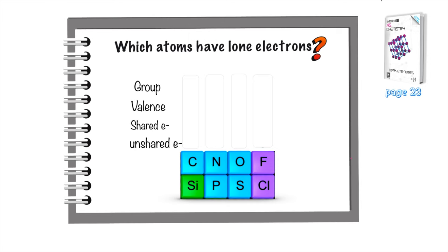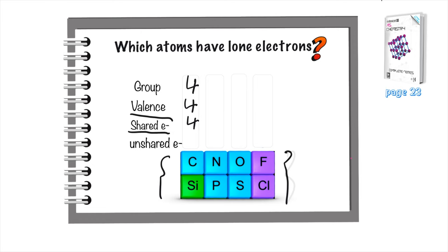To determine the shape of different molecules, you have to know which atoms contain lone or unshared electrons. I've taken this section of the periodic table because it contains the nonmetals — the atoms involved in covalent bonding. Starting with group four: the group number is four, the number of valence electrons is four, the number of shared electrons is four, and the number of unshared electrons is zero — you subtract shared from valence. For group five, the number of shared electrons is eight minus five, which is three, meaning nitrogen makes three covalent bonds.